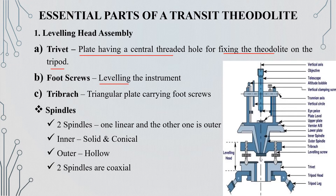The theodolite is of a bars nature. The second essential part is spindles. There are inner spindles and outer spindles, both of which are linear. The inner spindle is solid and conical, while the outer spindle is hollow.